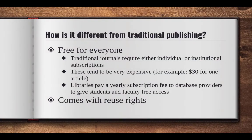So how is open access different from traditional publishing? Open access resources are free for everyone. Traditional journals require either individual or institutional subscriptions, which tend to be very expensive. For example, it could cost $30 for one article.